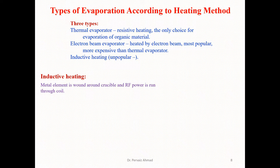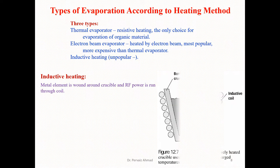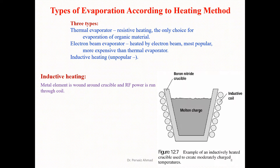In the experimental setup for inductive heating, we have metal elements wound around a crucible, and RF power is run through the coil. The inductive coil is provided with RF power for inductive heating, and the crucible type is basically boron nitride. This is an example of an inductively heated crucible used to create moderately high temperatures.